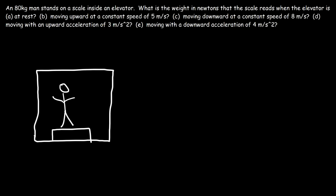Let's draw a free body diagram. There's the weight force of the person acting downward, and there's an upward force known as the normal force acting on the person. The person exerts a downward weight force and the scale exerts an upward normal force. What you need to understand is that the scale doesn't always read the weight force — depending on whether the elevator is moving upward or downward, the normal force is what the scale reads, and that can fluctuate. However, at rest, the scale will read the weight force.